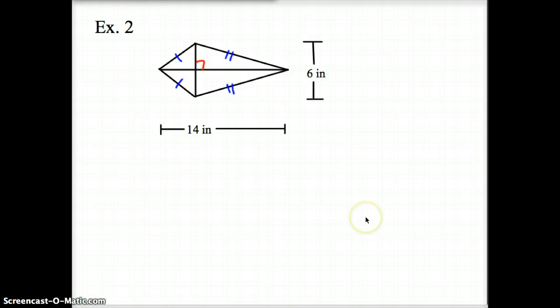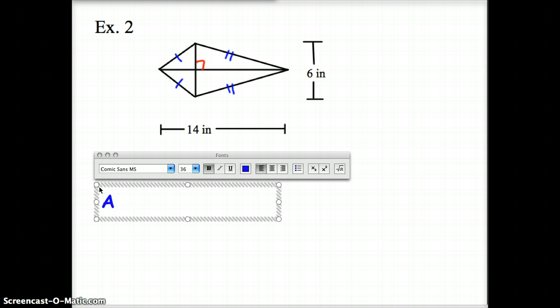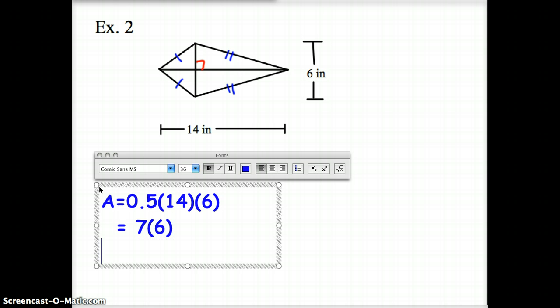Example 2, here we have a kite. Kite's diagonals meet at right angles, just like they do in rhombi or rhombuses. So all we're doing for the area of a kite, we're taking half your diagonals times each other. So half of 14 times 6. Half of 14 is 7, and 7 times 6 gives us 42 inches squared.